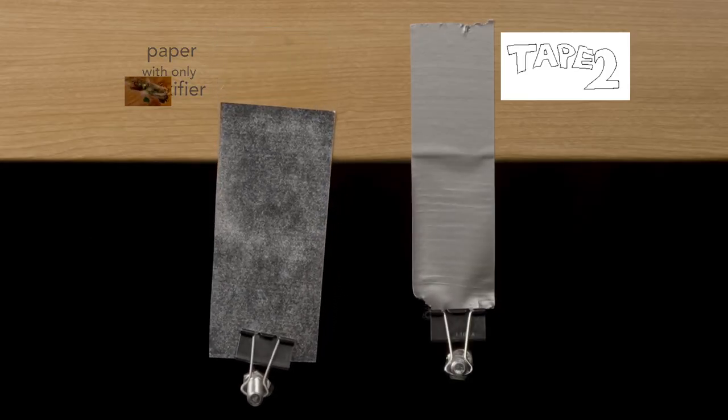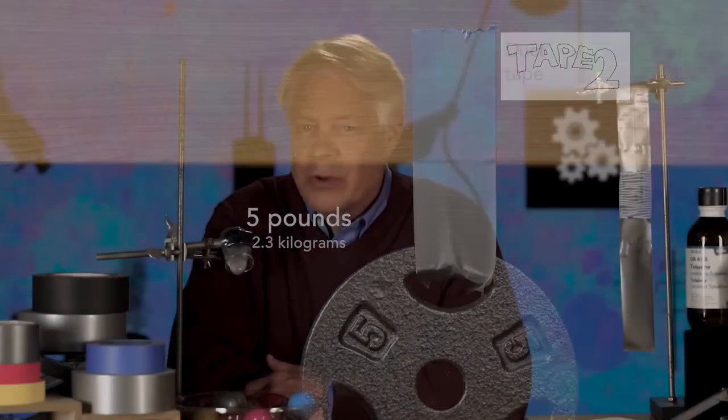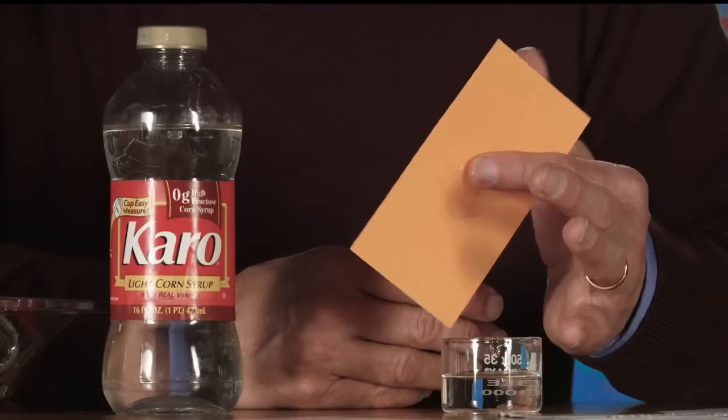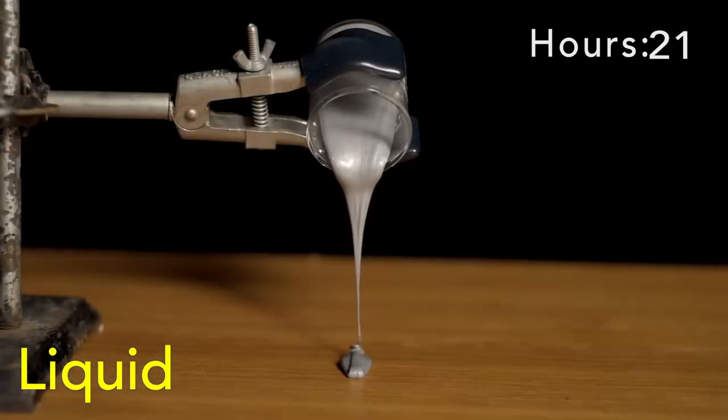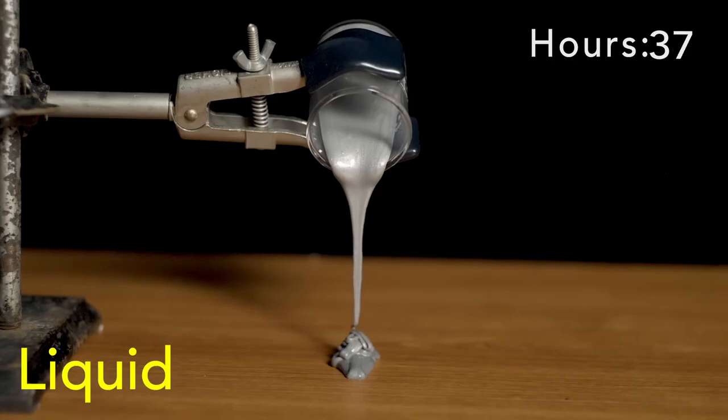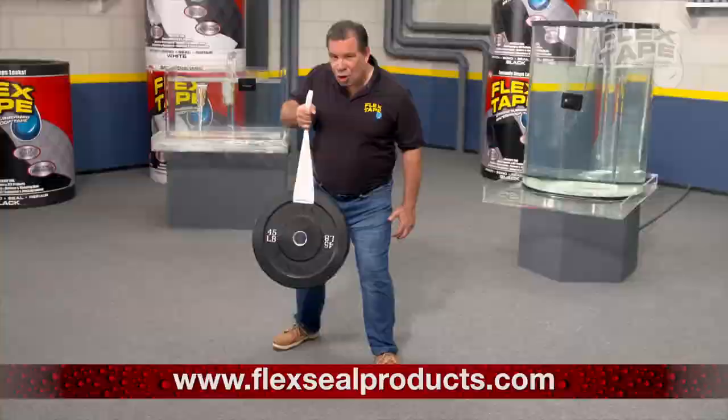Contrast that to Flex Tape, which can support a five-pound weight. So to create an adhesive for Flex Tape, the tackifier is mixed with the stretchiest substance—silly putty. Hi, Phil Swift here for Flex Tape!